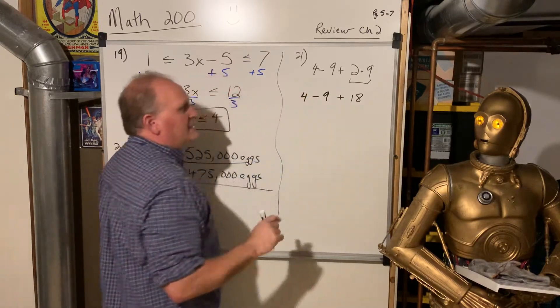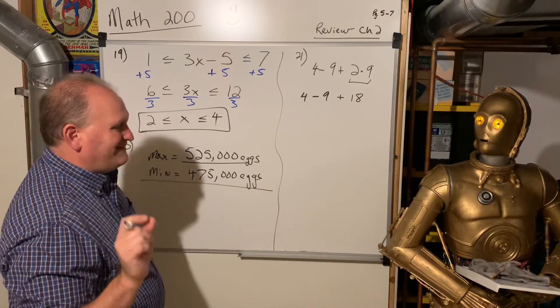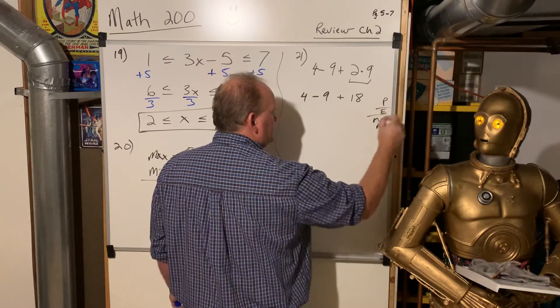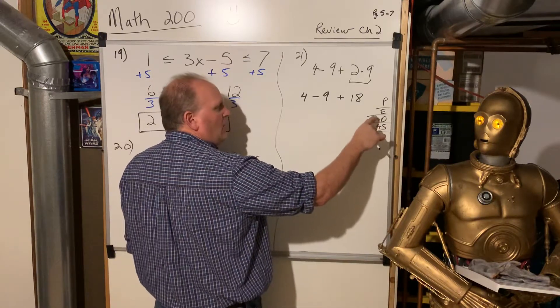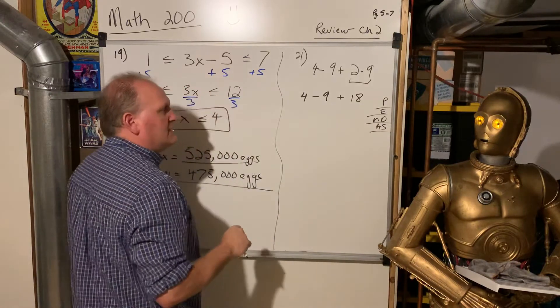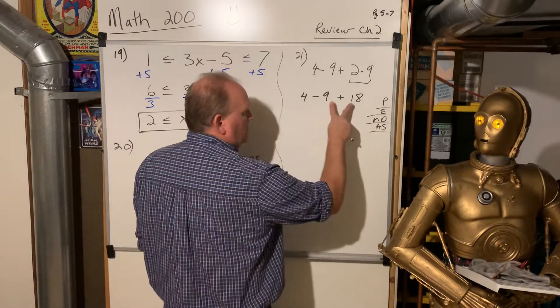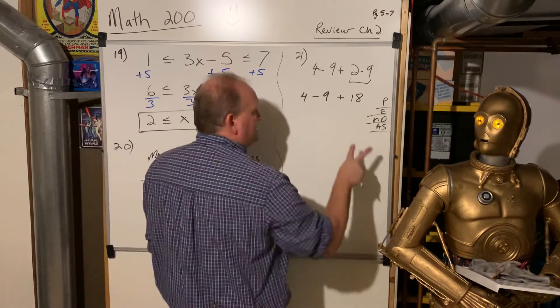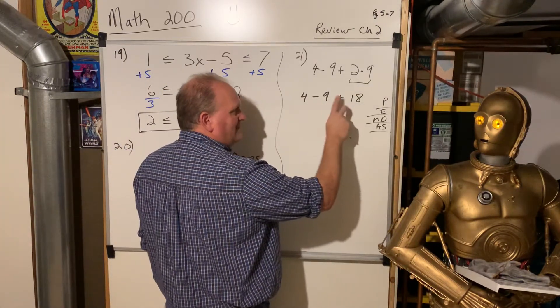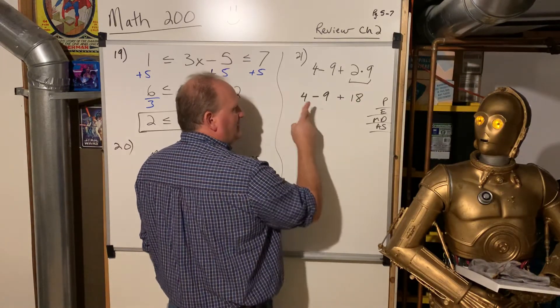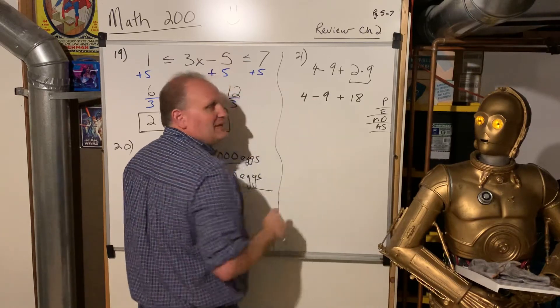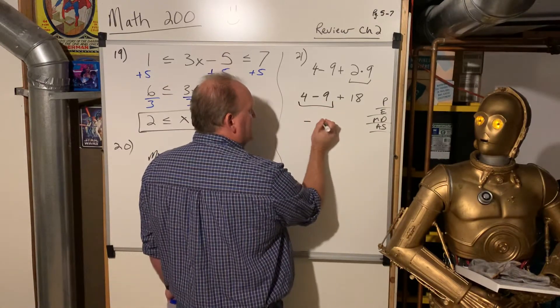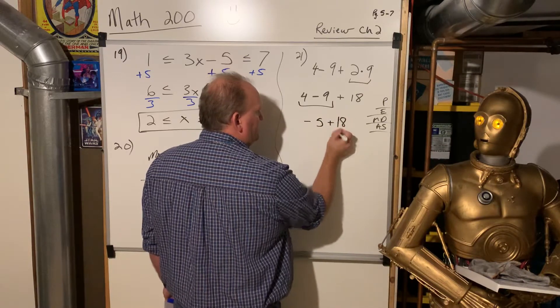But now you've got to be careful, because this is a little bit confusing. Lots of people get this confused. So when you think, please excuse my dear Aunt Sally, parentheses, exponents, multiply, divide, add, subtract. People then think, you always multiply before you divide, you always add before you subtract. That's not true. We don't say, oh, this is add, so we're going to do that first and get 27, and then do 4 minus 27, and that would be negative 23. That would be wrong.